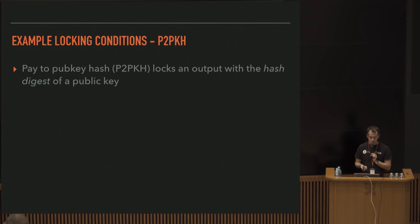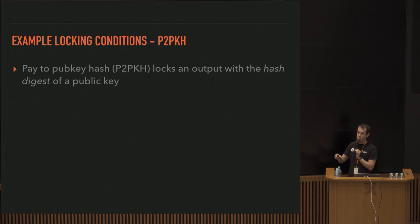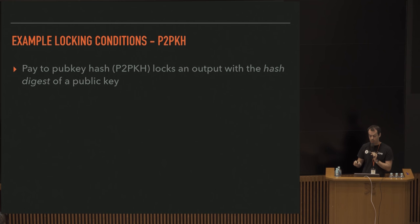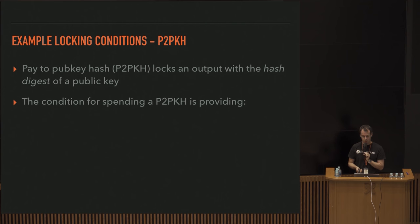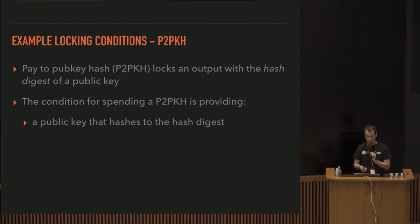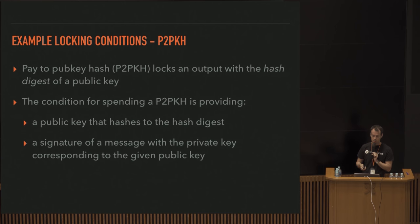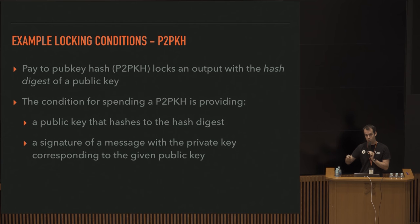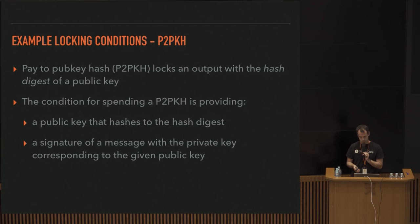Pay-to-pubkey-hash (P2PKH) is another type where the locking script - the ScriptPubKey - contains the hash digest of the public key. The conditions for spending are providing a public key that hashes to that digest, plus a signature of a message with the private key corresponding to that public key.